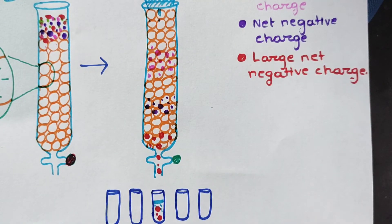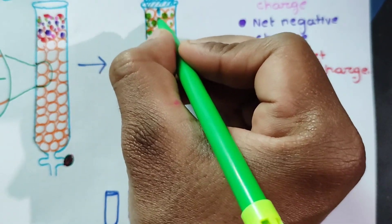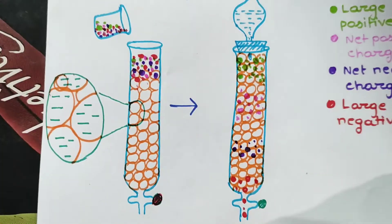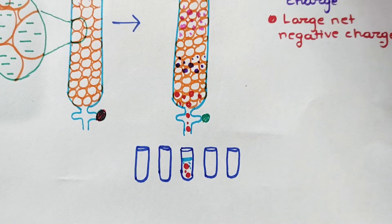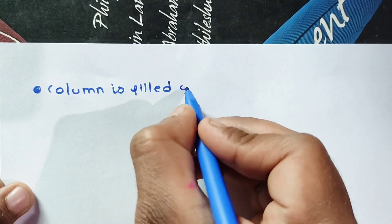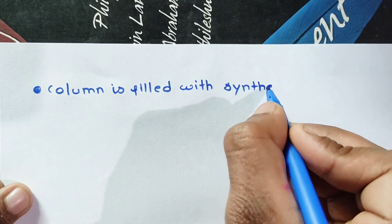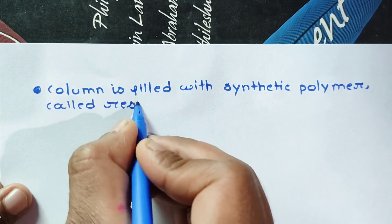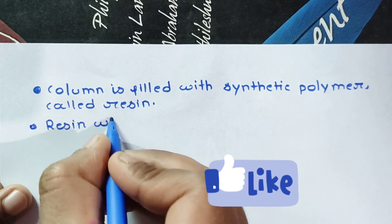Net negative charge and large net negative charge proteins elute earlier than the positive charge proteins, because the migration of the positive charged proteins is retarded by their interactions with the negative groups. On the other hand, the negative charged proteins are eluted earlier because they cannot interact with the negative resin.